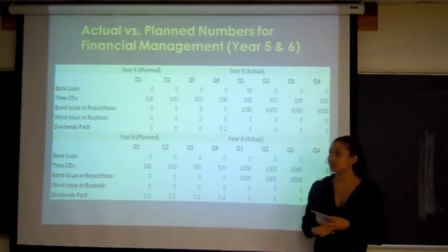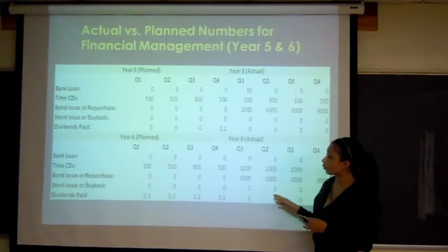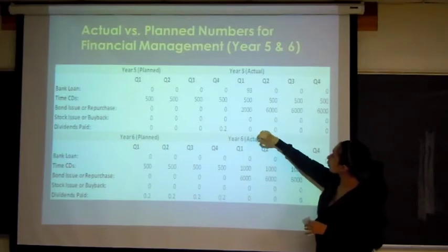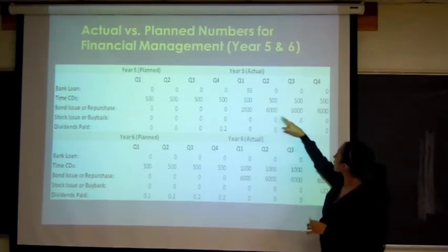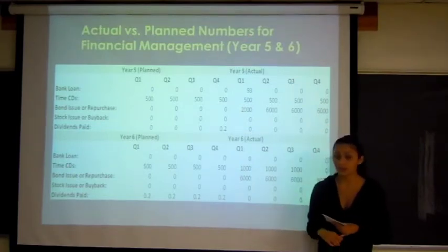Next, we're going to look at our bond issue and repurchase. We had no planned bond issue and repurchase for year 5 or year 6. However, we did purchase bond issues quarters 1 through 4, $2 million quarter 1, and $6 million thereafter onto year 6. We did this in order to increase our cash flows.